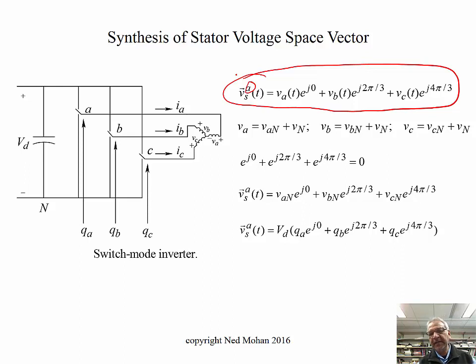But we may keep it or not keep it. It's up to us. But how can we define these voltages, VA, VB, and VC, in terms of voltages of these poles, for example, A, with respect to this negative DC point N, VAN.